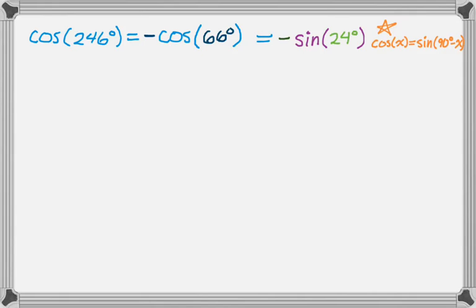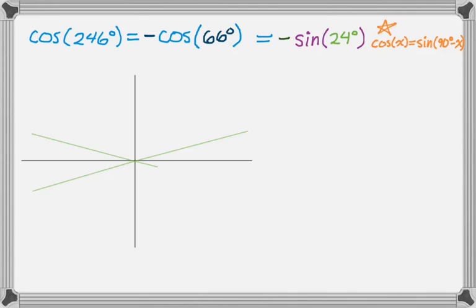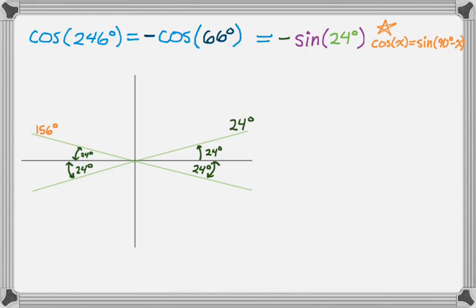Now I draw a picture with all four quadrant angles at once — each making a 24-degree angle with the x-axis. In the first quadrant the angle is 24 degrees, in the second it's 180 minus 24 = 156 degrees, in the third it's 180 plus 24 = 204 degrees, and in the fourth it's 360 minus 24 = 336 degrees.